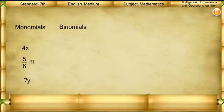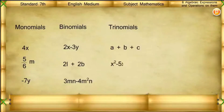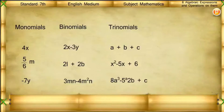Examples of binomials: 2X minus 3Y; 2L plus 2B; 3MN minus 4M squared N. Examples of trinomials: A plus B plus C; X squared minus 5X plus 6; 8A cubed minus 5A squared B plus C.